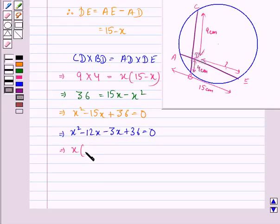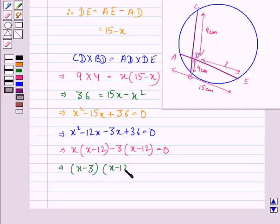This implies X into X minus 12 minus 3 into X minus 12 is equal to 0. This implies X minus 3 into X minus 12 is equal to 0.